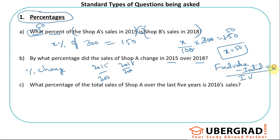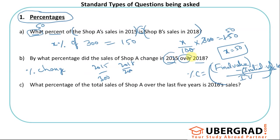Students often get confused here — when they see two values they think 'larger minus smaller divided by smaller × 100,' or they default to chronological order: (2018 value − 2015 value) / 2015 × 100. Both approaches can be wrong. Always understand how the statement is framed. The percentage change formula depends on identifying the correct final value and the correct initial or base value according to the question. Here, 'over 2018' means 2018 is the base value.